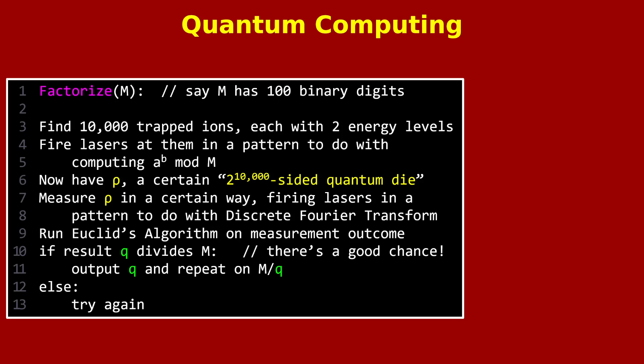Here's a snapshot of some pseudocode, originally described by Peter Shor, that solves the problem of factorizing a number M with, let's say, 100 binary digits. Again, the actual details aren't important. The thing I want you to notice is that the first few lines describe getting hold of, say,